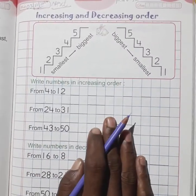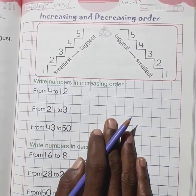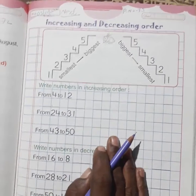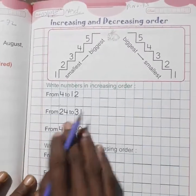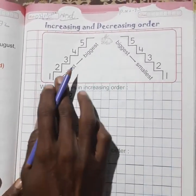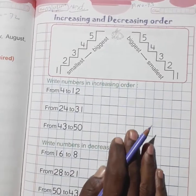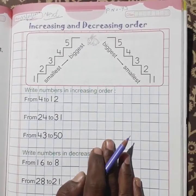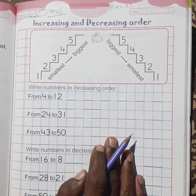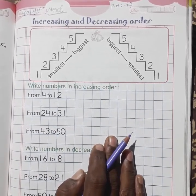Good morning students, welcome to your new class, standard UKG Math, page number 73. Today your chapter is increasing and decreasing order. Increasing means smallest number to biggest number, just like 1, 2, 3, 4, 5 series.